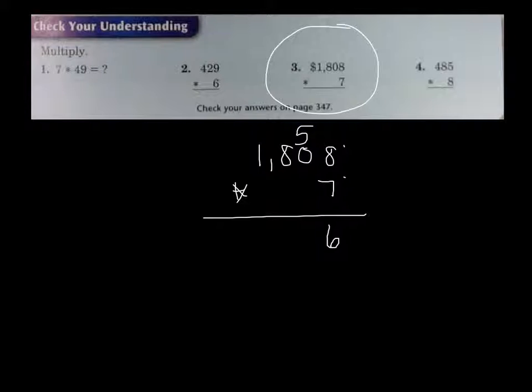Put the 6 down and carry the 5. 7 times 0 is 0. 0 plus 5 is 5. Then the 100's place. 7 times 8 is 56. Put the 6 down, carry the 5. And 7 times 1 is 7 plus 5 is 12. And we add the comma.